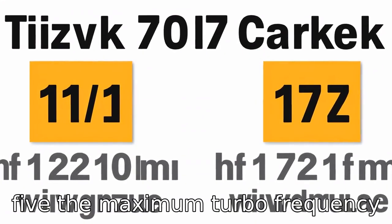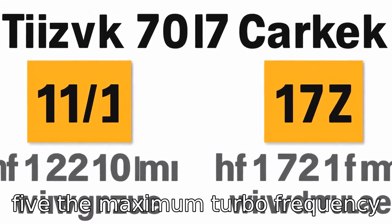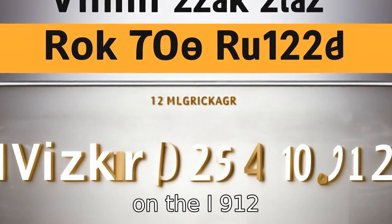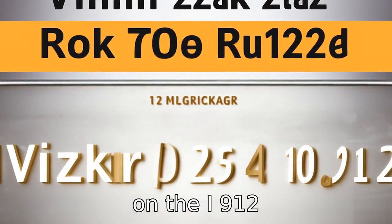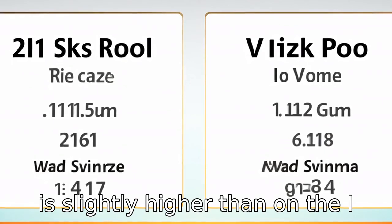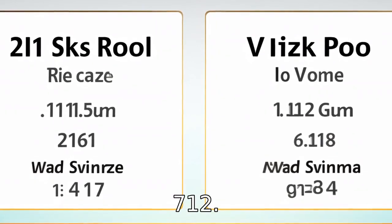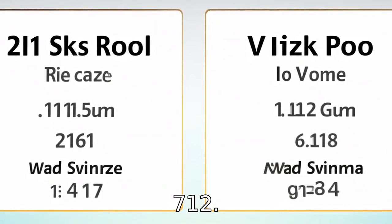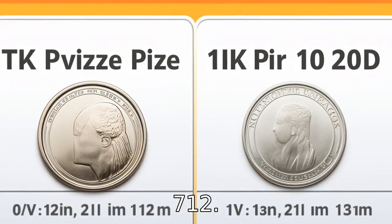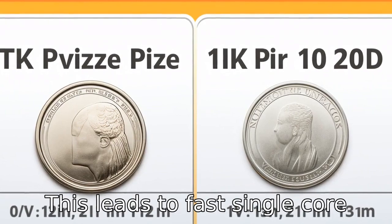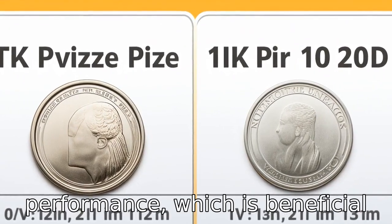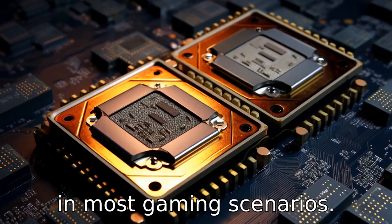Difference five: the maximum turbo frequency on the i9-12900K is 5.2 GHz, slightly higher than the i7-12700K's 5.0 GHz. This leads to faster single-core performance, which is beneficial in most gaming scenarios.